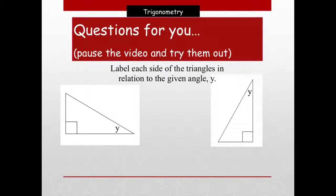Okay, so here's some questions for you. I've got two triangles here, two right angle triangles. What I'd like you to do is label each side, either hypotenuse, opposite or adjacent. Pause the video, try them out, and then restart the video again to see if you got your answers right.